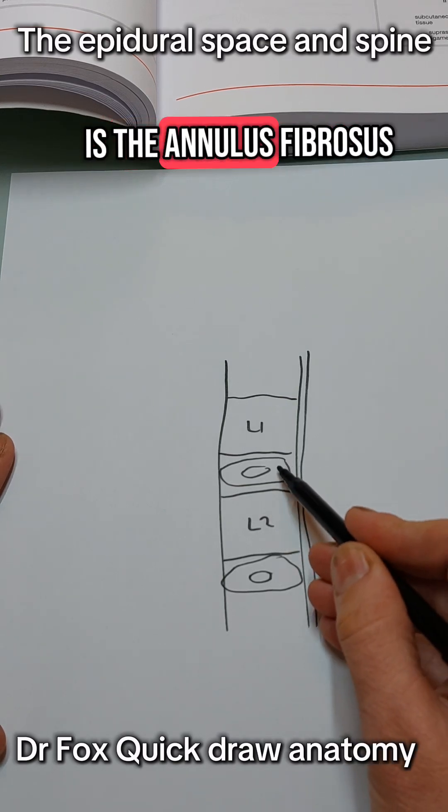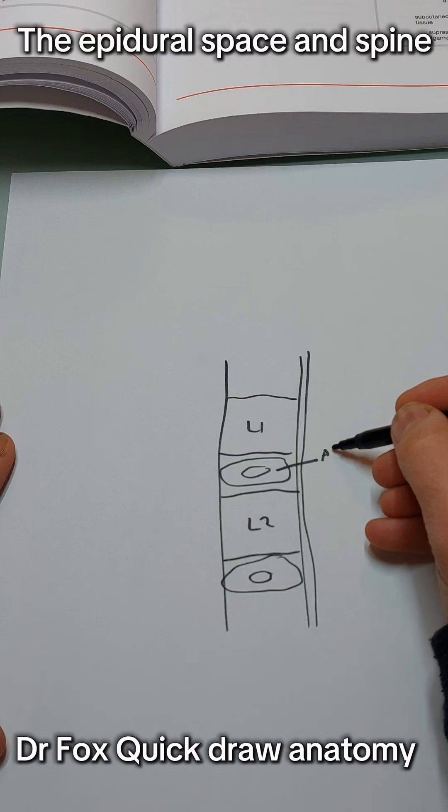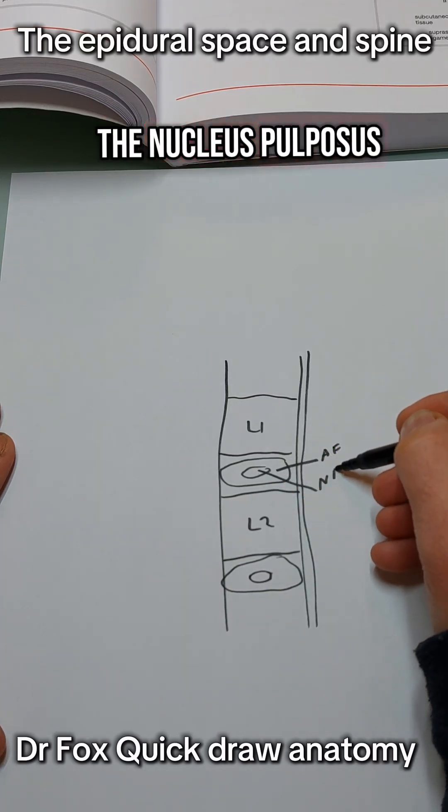And then this is the annulus fibrosis, and this is the nucleus pulposus.